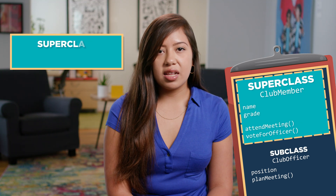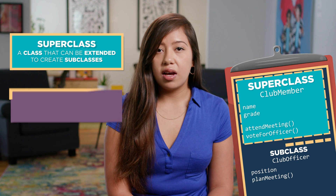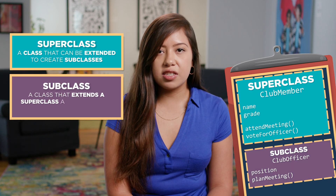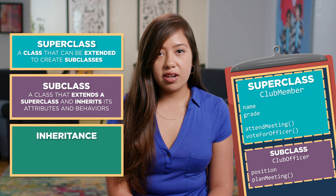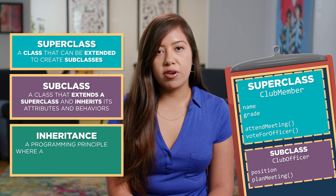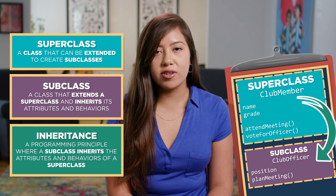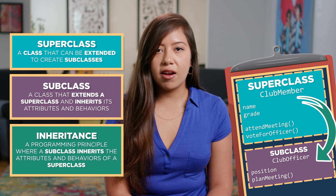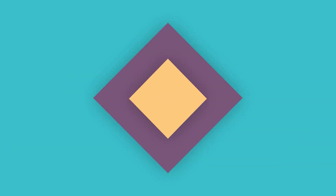A superclass is a class that can be extended to create subclasses. A subclass is a class that extends a superclass and inherits its attributes and behaviors. Inheritance is an object-oriented programming principle where a subclass inherits the attributes and behaviors of a superclass. Inheritance allows us to create special versions of a class and reuse code, using subclasses with their own capabilities that share attributes and behaviors from a superclass.